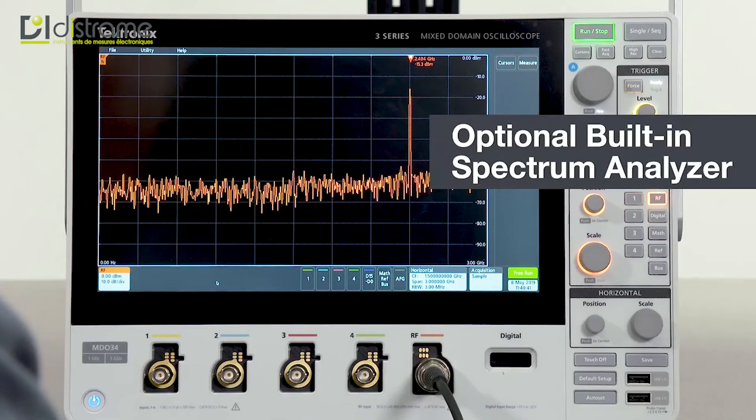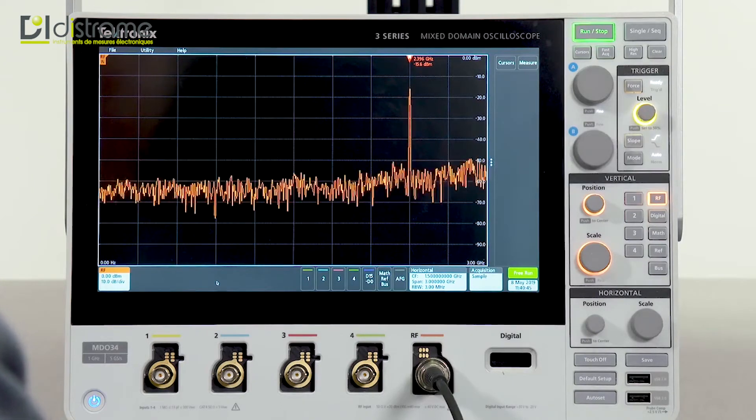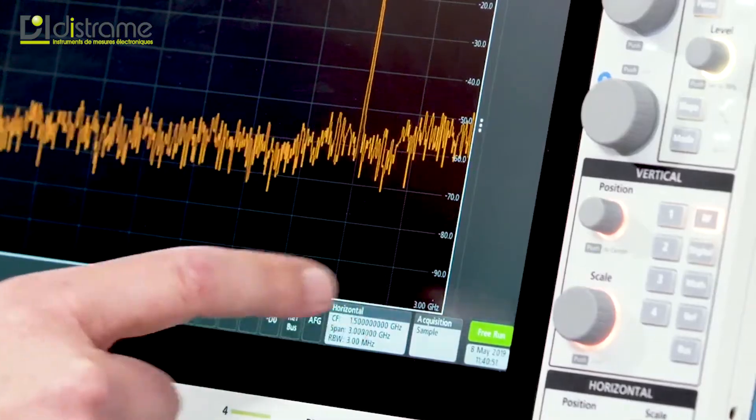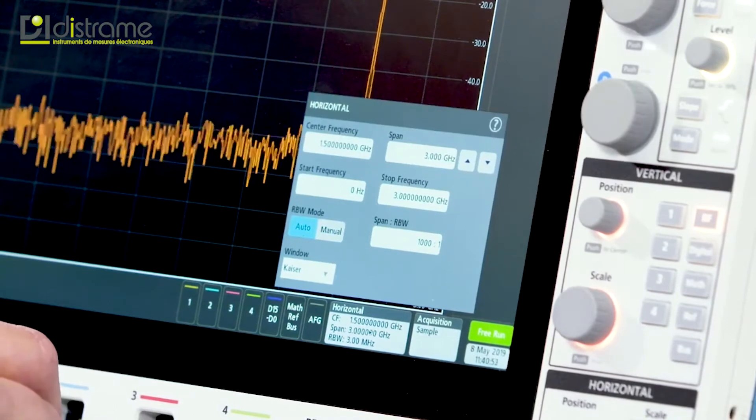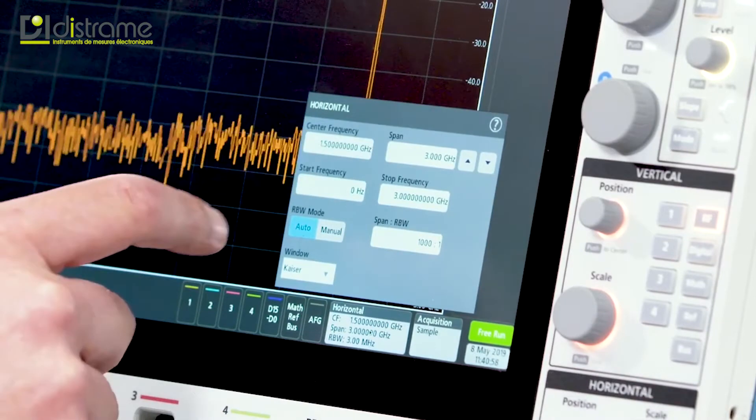Unlike traditional swept spectrum analyzers, the capture bandwidth of the 3-series MDO is exceptionally wide at up to 3 gigahertz. Usual spectrum analyzer-like controls are found in the horizontal menu, where I can set my center frequency, span, and RBW.